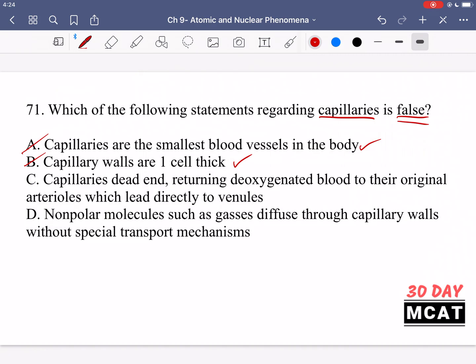Option C is saying capillaries dead end returning deoxygenated blood to their original arterioles which lead directly to venules. No this is something which is incorrect. They don't just dead end. It's not like you have blood leaving the heart going through different blood vessels reaching the capillaries and then stopping and then coming back and somehow the oxygenated and deoxygenated blood is mixing. That would be way too difficult to separate the two and then be able to re-oxygenate the deoxygenated blood.